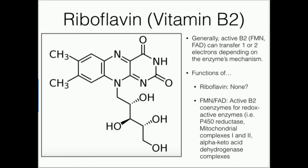Some of the most notable enzymes that have these are going to be the two complexes in the mitochondria: complex I and complex II. Complex I uses an FMN. There are also other proteins, including the flavoprotein oxidoreductases that are not actual technical complexes in the mitochondrial electron transport chain. Cytochrome P450 reductase has both an FMN and an FAD in it. And the alpha-ketoacid dehydrogenases have an FAD.